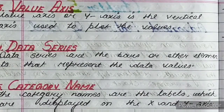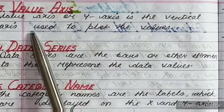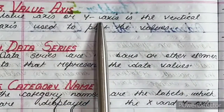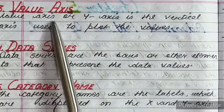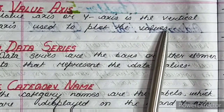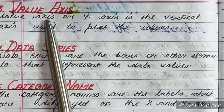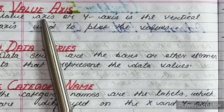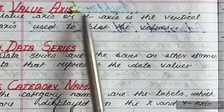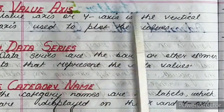Next is value axis. Value axis, or y axis, is the vertical axis used to plot the values. जो आपकी y axis होती है उसको हम value axis बोलते हैं — वो vertical axis होती है, and it is used to plot the values in the chart.